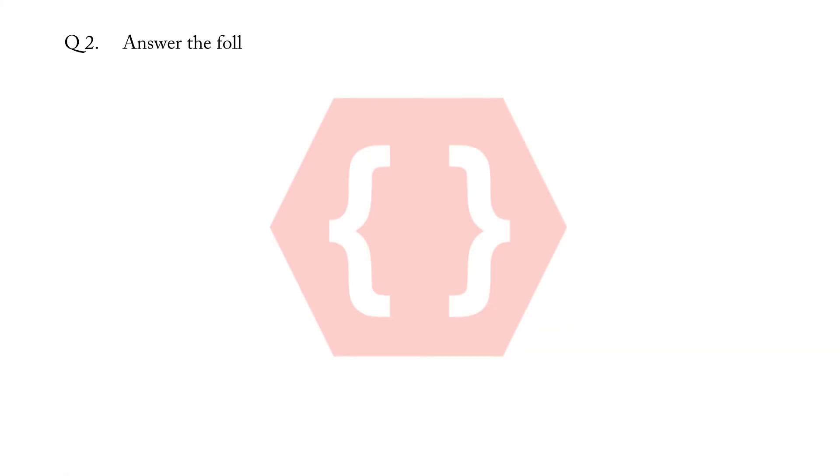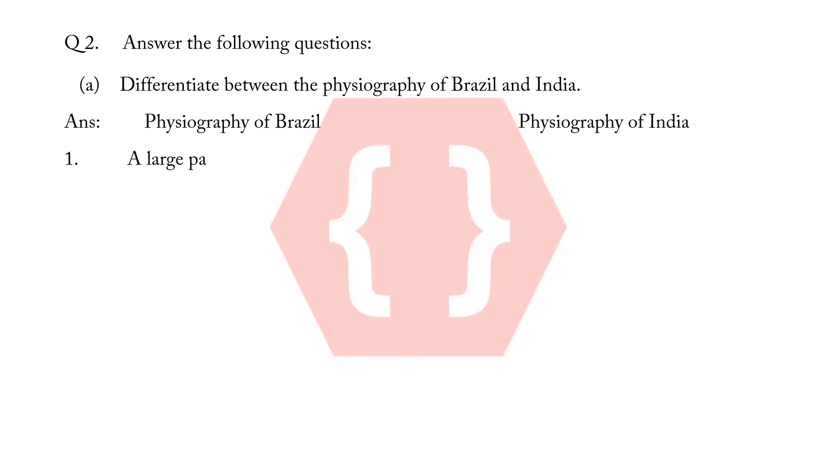Question 2: Answer the following questions. A) Differentiate between the physiography of Brazil and India. Answer: Physiography of Brazil, Physiography of India. 1. A large part of Brazil is occupied by highlands, plateaus and small mountains.